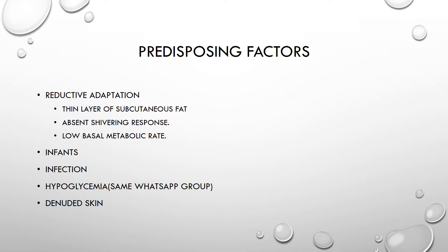The predisposing condition factors to hypothermia in malnutrition patients: the first thing is that they have reductive adaptation. This means they have a thin layer of subcutaneous fat, so they don't have enough insulation.